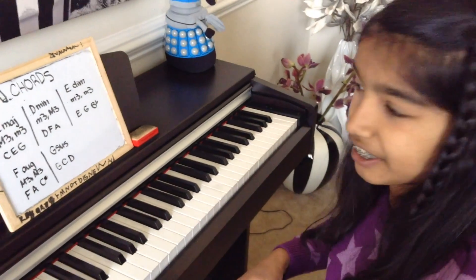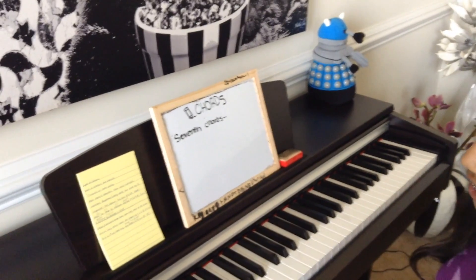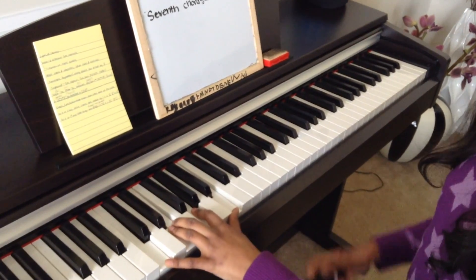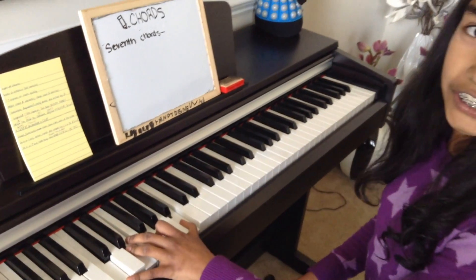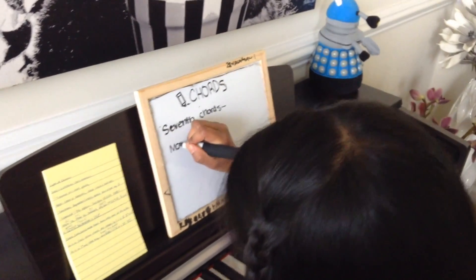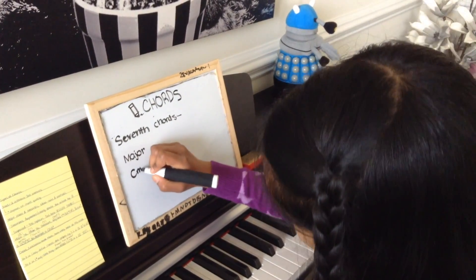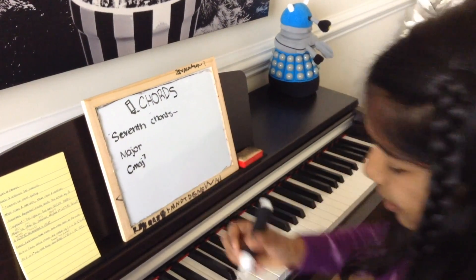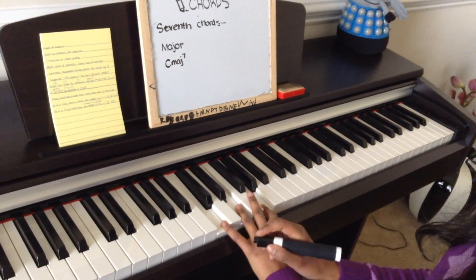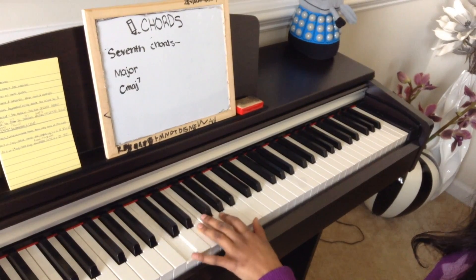Now let's move on to seventh chords. Seventh chords are found a lot in jazz, but also in classical music. Seventh chords are basically when you add another third on top of a triad. There are many different types. Let's start with the major seventh: a C major seventh is a C major chord with the seventh note of the scale added. B is the seventh note, so your chord is C, E, G, B.